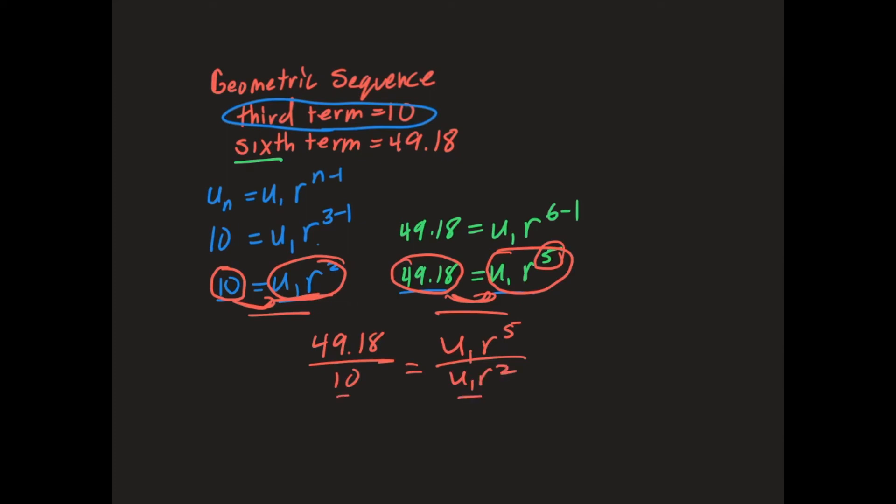And because 10 and u1 R squared are the same thing, I just divide both sides by the same thing, and that's allowed according to our normal algebraic process. So now once I divide, 49.18 divided by 10 - you could use your calculator at this point if you want - I get 4.918 is equal to, now notice that the u1s cancel out, and then R fifth divided by R squared, we subtract the exponents there, so I have R to the third power.